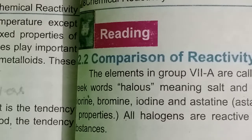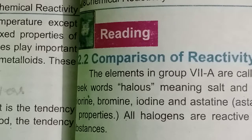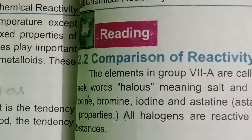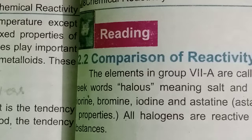occupy group 7A in the periodic table. Halogens include fluorine, chlorine, bromine, iodine, and astatine.